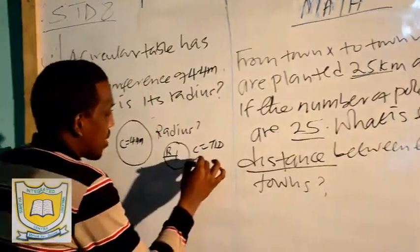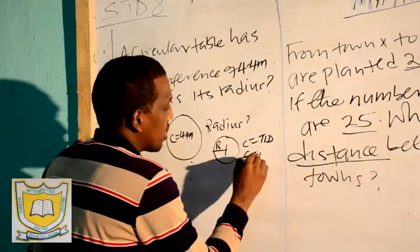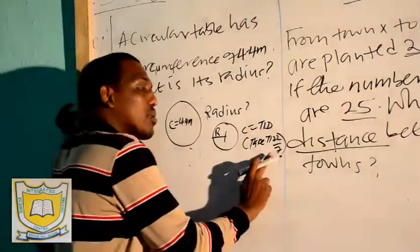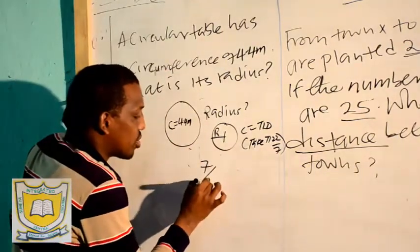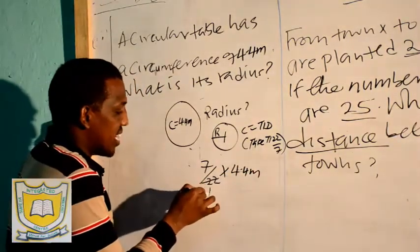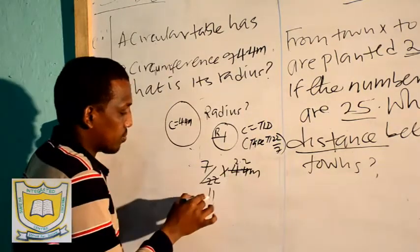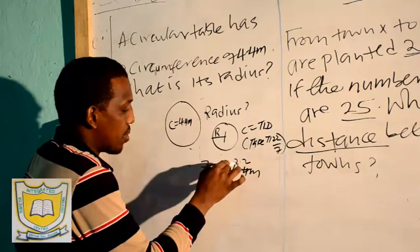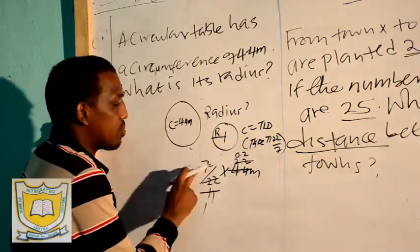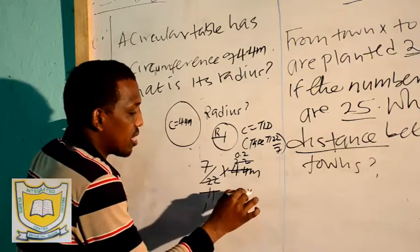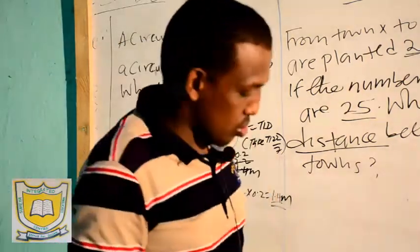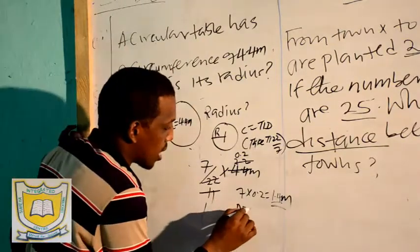For an easy way to get the radius, we make π the reciprocal. Reciprocal means upside down. So we say 7 over 22 multiplied by 4.4 meters. Dividing: 4.4 by 2 gives 2.2, by 2 gives 11, then 11 divided by 11 gives 1, giving 0.2. So 7 times 0.2 gives 1.4 meters.